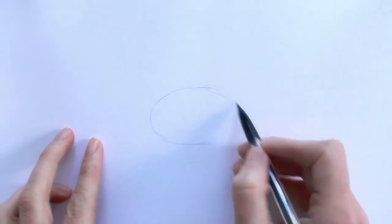So first up what we do is we draw an oval. It's in the center of our page.